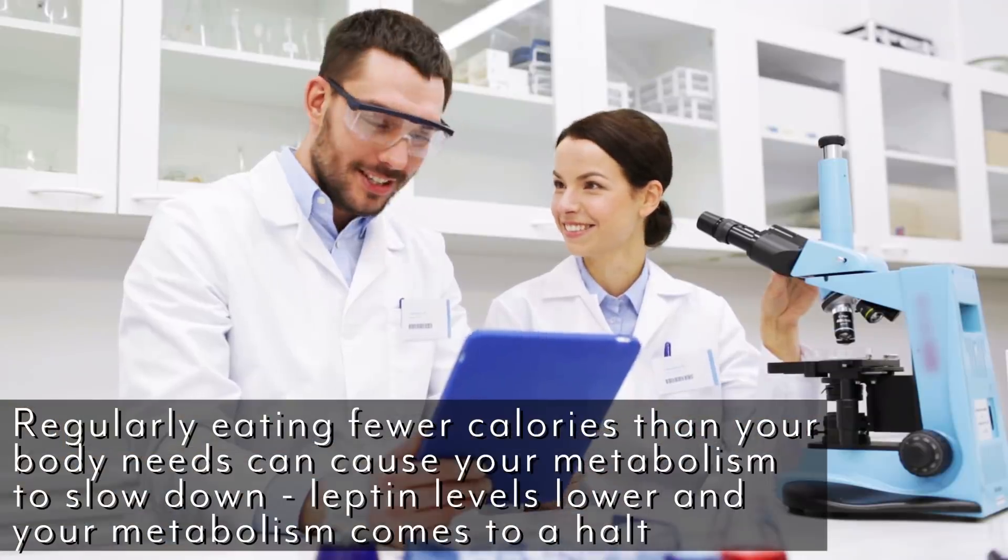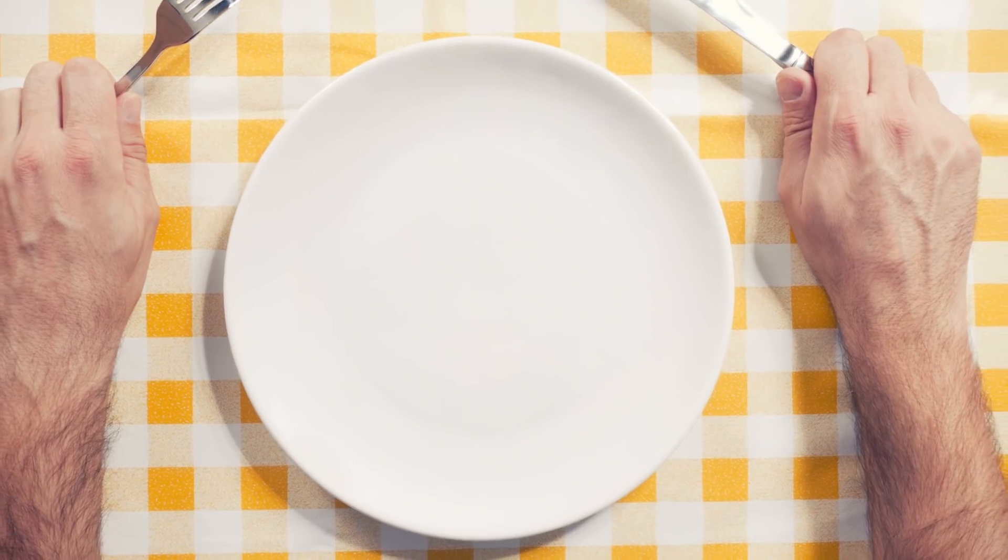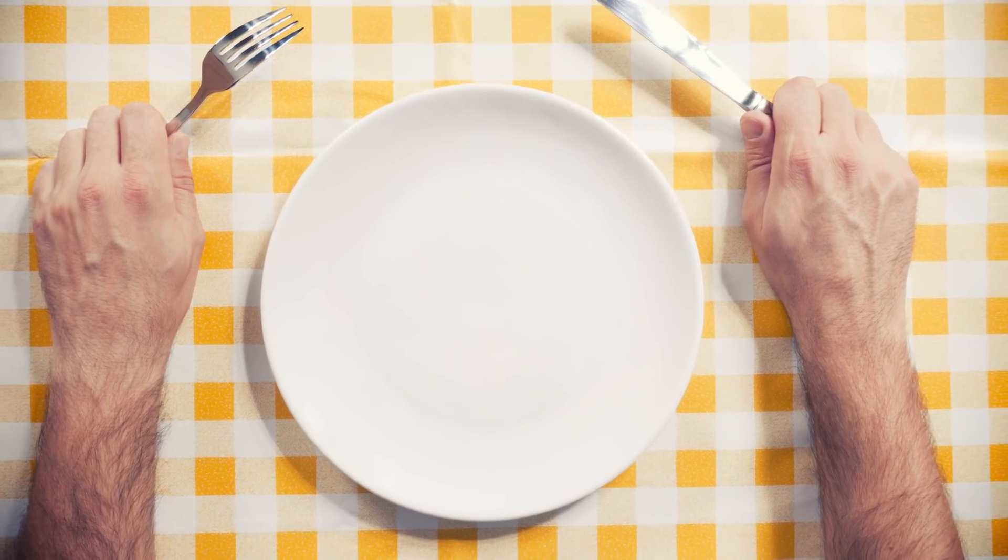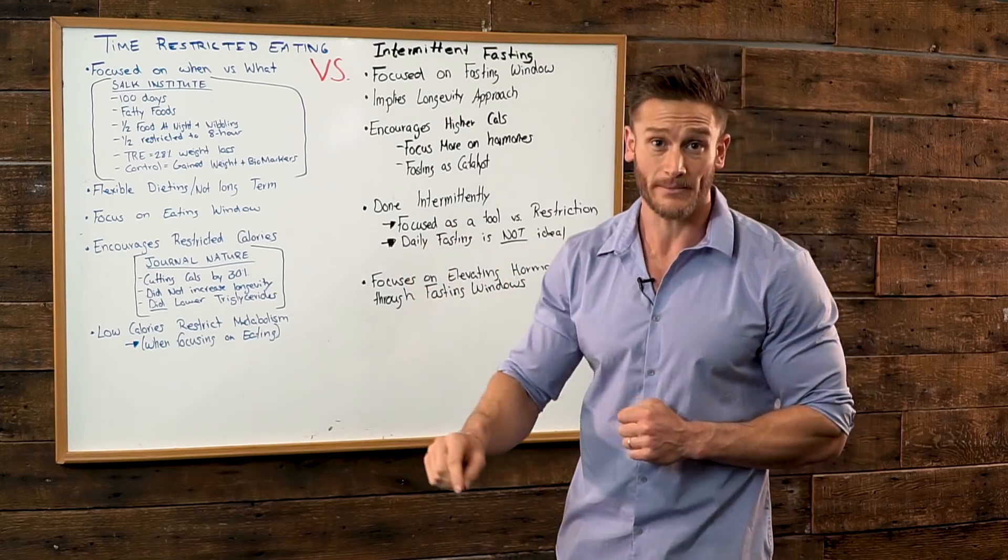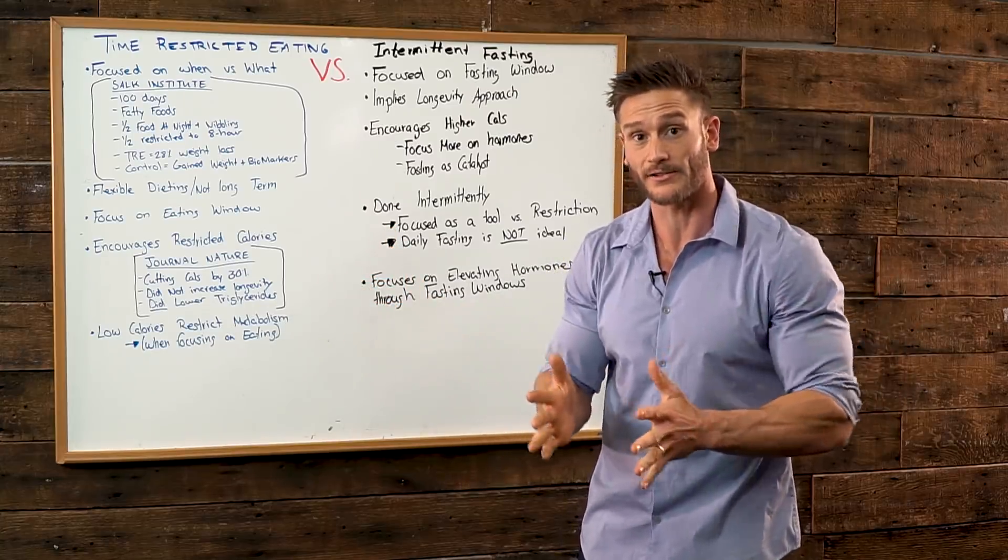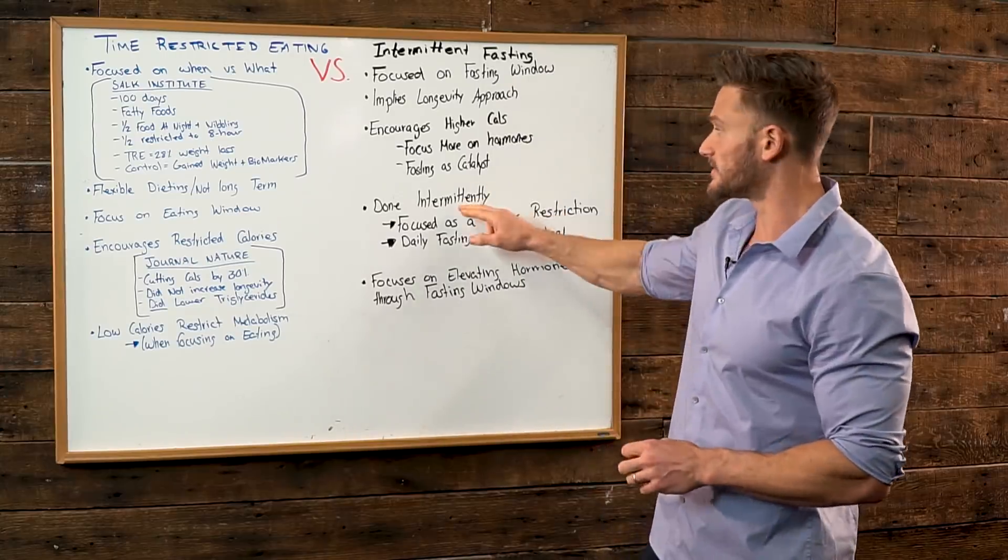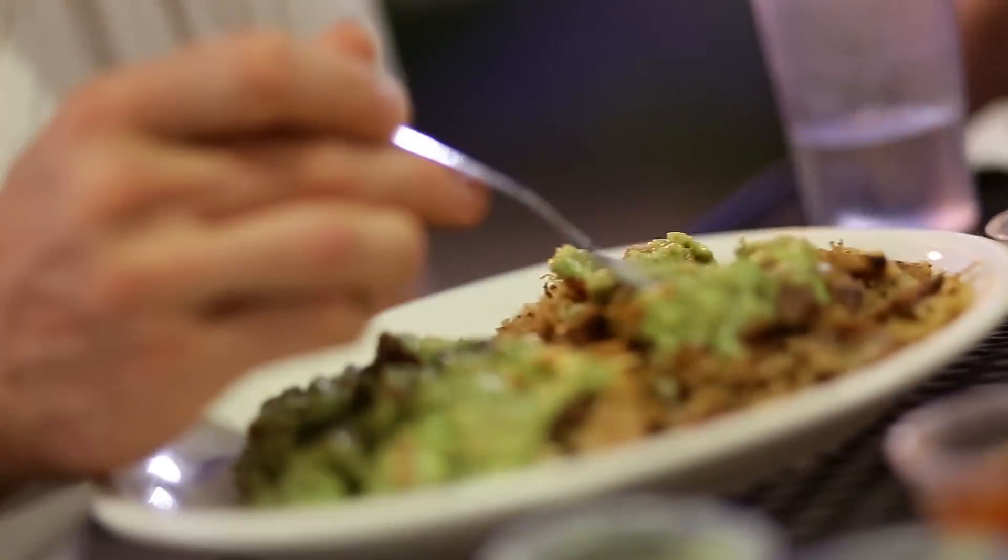So intermittent fasting every day would slow down your metabolism. It's not about eating every two hours. It's just about the fact of shrinking down the calories that you're consuming. That's going to slow down your metabolism over time. Use this intermittently and keep your calories moderately high when you eat with intermittent fasting.